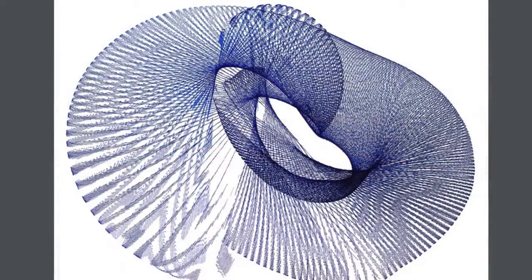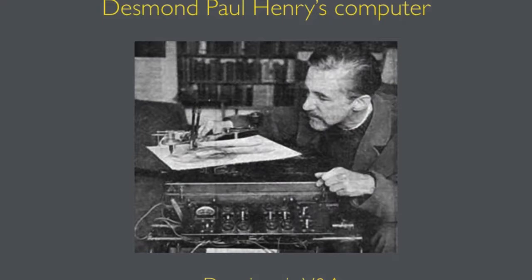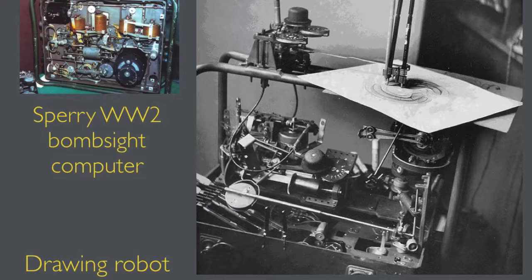In the 60s, Desmond Paul Henry converted a World War II Sperry bombsite computer into drawing robots. He was a pioneer in analogue computer art, and some of his drawings were in the V&A collection.